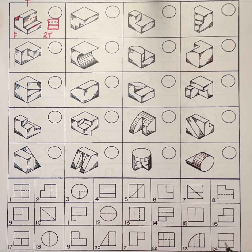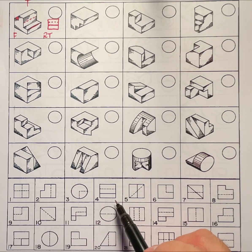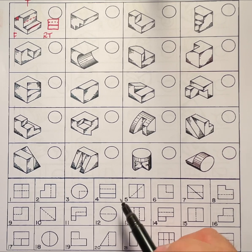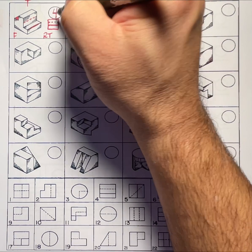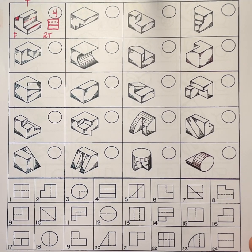So what orthographic view at the bottom portion of this page matches what I have in my sketch. If I look around I'm gonna have a solid line below a hidden line. Number four looks like a perfect match. So number four would be the hidden line solution for problem number one.